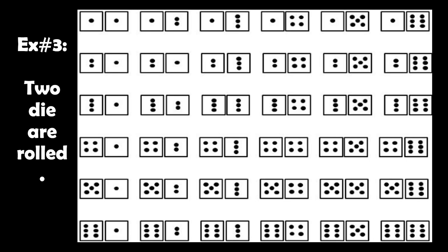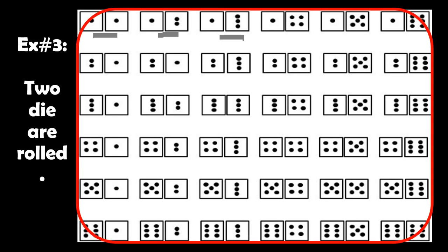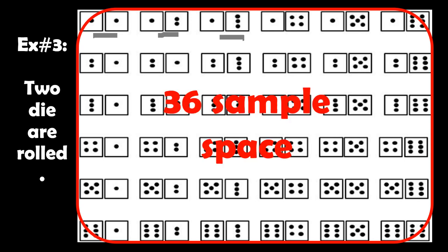Example number three: a die is rolled. Note that the plural form of die is dice. When you roll 2 dice, looking at the possible sample space — for the first roll you can get 1,1 then 1,2 then 1,3 and so on. If you count all the outcomes, the total is 36 sample space.